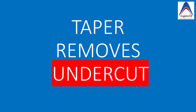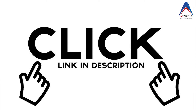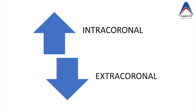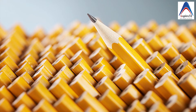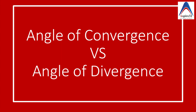I have already discussed taper, flare and bevel in a very simplified way in one of the recently posted videos — if you want to watch it, please find the link in the description. Now, taper is a generalized word; it doesn't differentiate between the various types of restorations. Indirect restorations can be either intracoronal or extracoronal, and to differentiate taper with respect to these types of restorations we have two different terminologies: angle of convergence and angle of divergence.